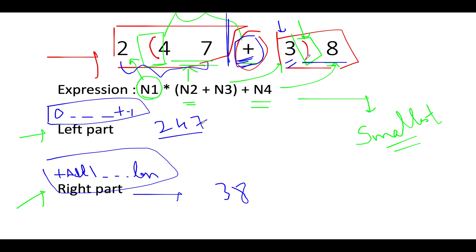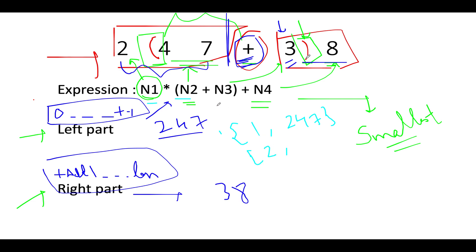Now we loop over the left part and the right part independently to identify all possible values of N1 and N2 from the left part, and N3 and N4 from the right part, using a two-pointer approach. For the left part 247, one possibility is N1=2, N2=47. Another is N1=24, N2=7. A third is N1=1, N2=247. These can simply be generated using a two-pointer approach — pretty straightforward.